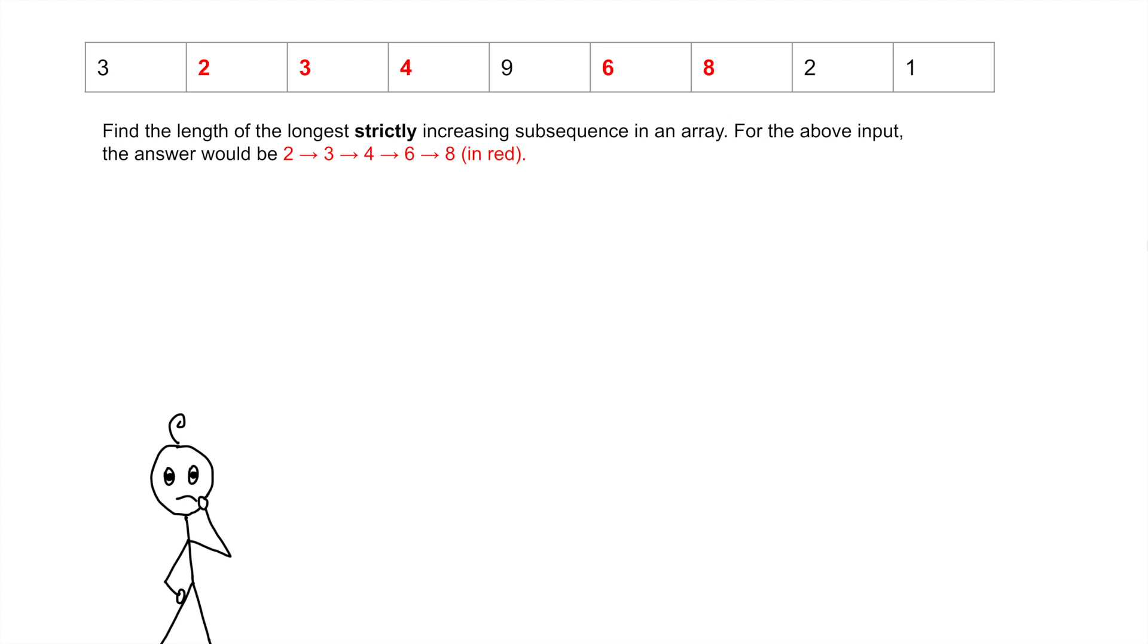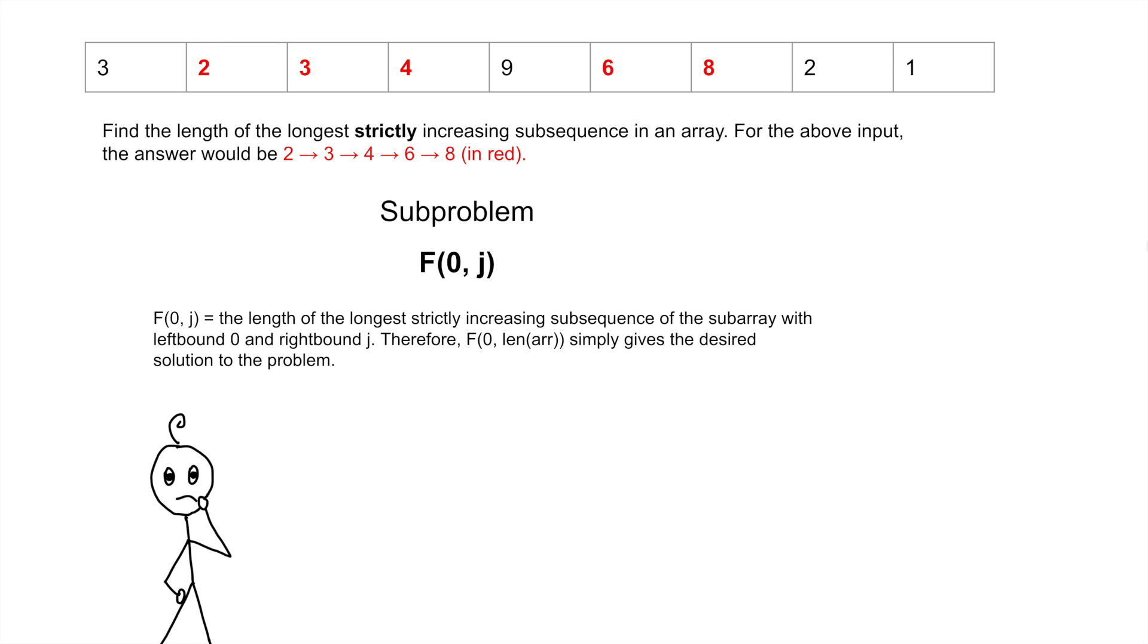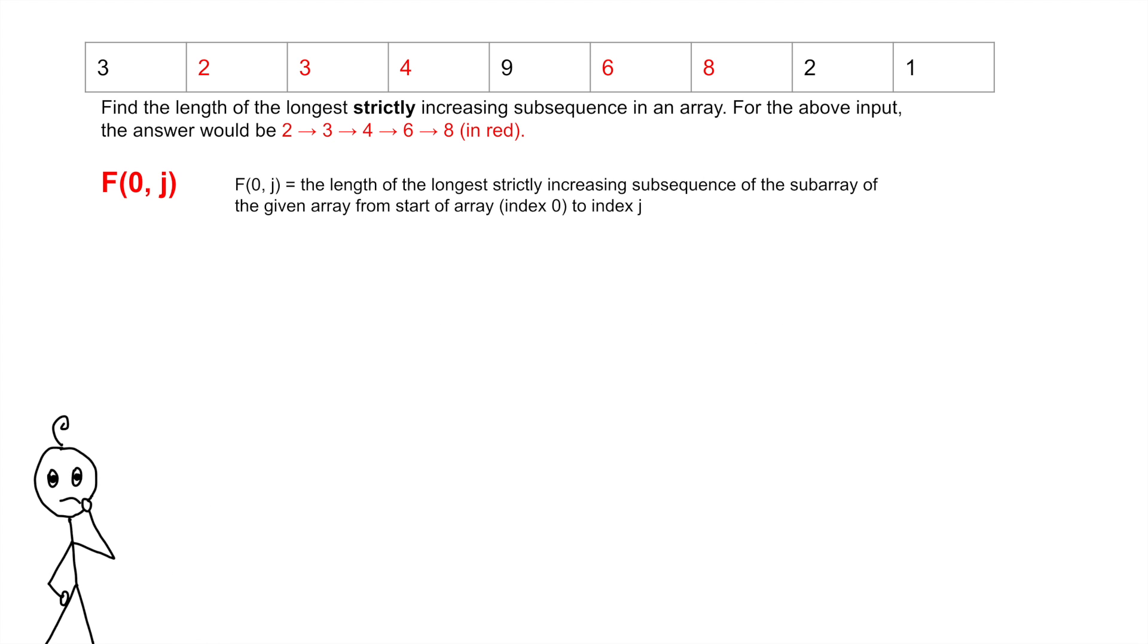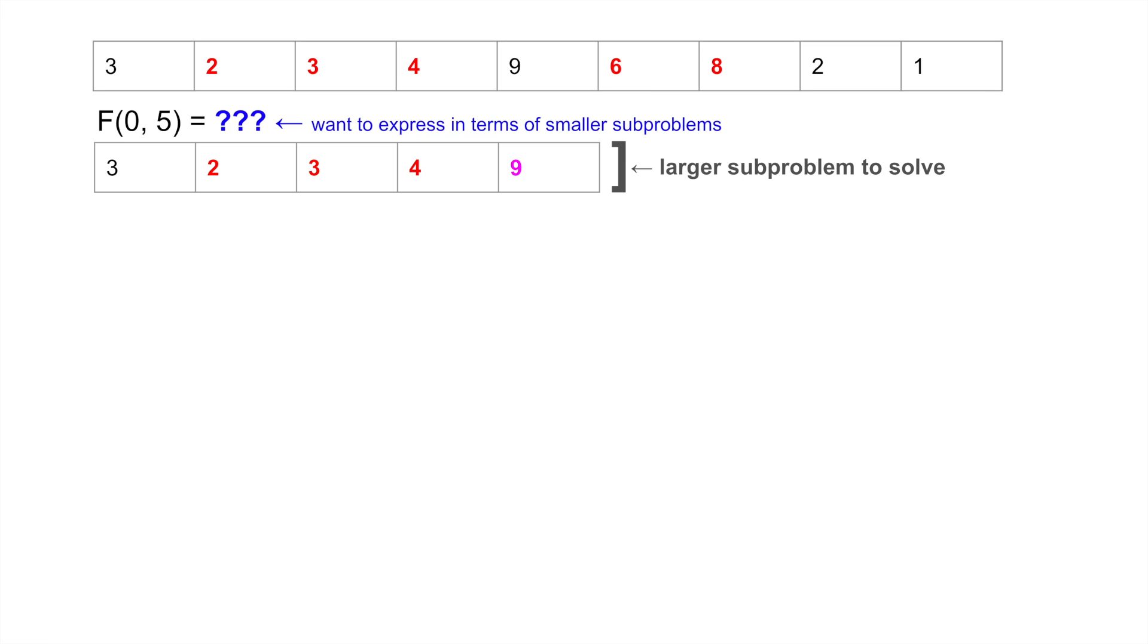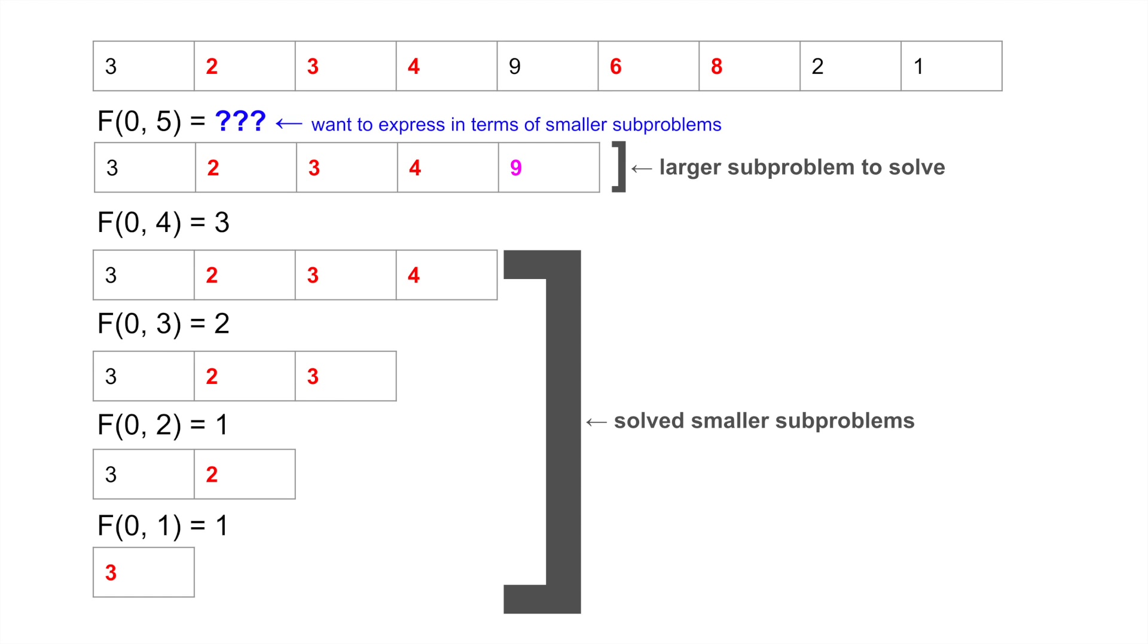Let's start with framing our sub-problem. Naturally, we could try solving for the sub-array of the larger array. This being the case, we could frame our sub-problem as f of 0 and j, where f of 0 and j represents the length of the LIS within just the 0 to j sub-array. For example, f of 0 to 3 would be equal to 2. Let's try to build a recurrence relation from f of 0 and j. The question we now want to ask ourselves is can we build a relationship between the larger sub-problems and the smaller sub-problems? In other words, can we express f of 0 and 5 in terms of f of 0 and 4 in all the smaller evaluations of f?